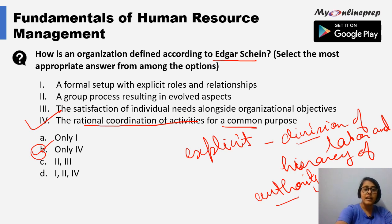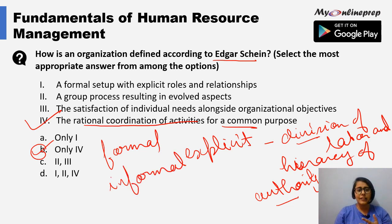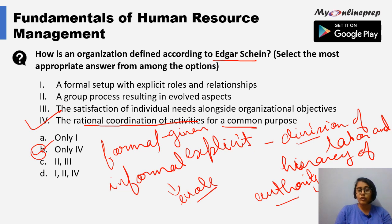What we get through this definition is that the coming together of people can be either formal or informal. In formal organizations, activities, processes, and roles are documented so that approach, consistency, and decision-making can be maintained. In informal organizations, aspects evolve as work progresses. These are the two components of the definition given by Edgar Schein. It is very important to remember this definition, and the right answer to this question is B — only four.